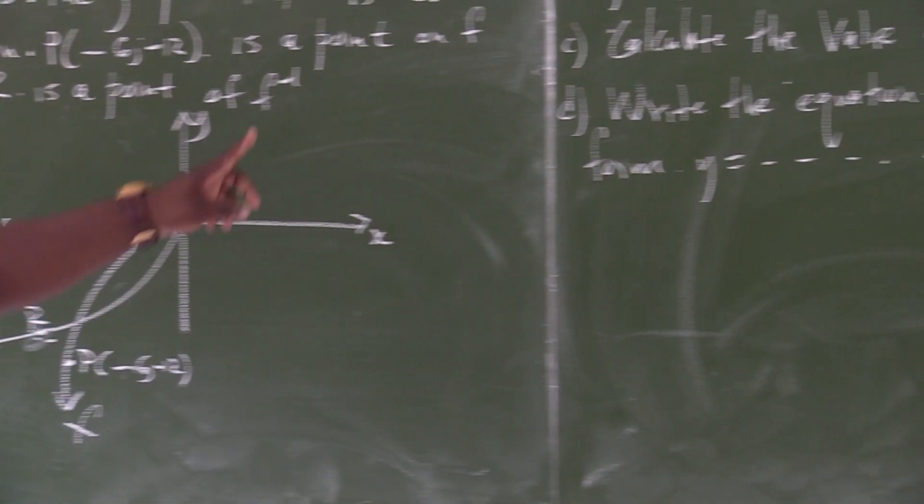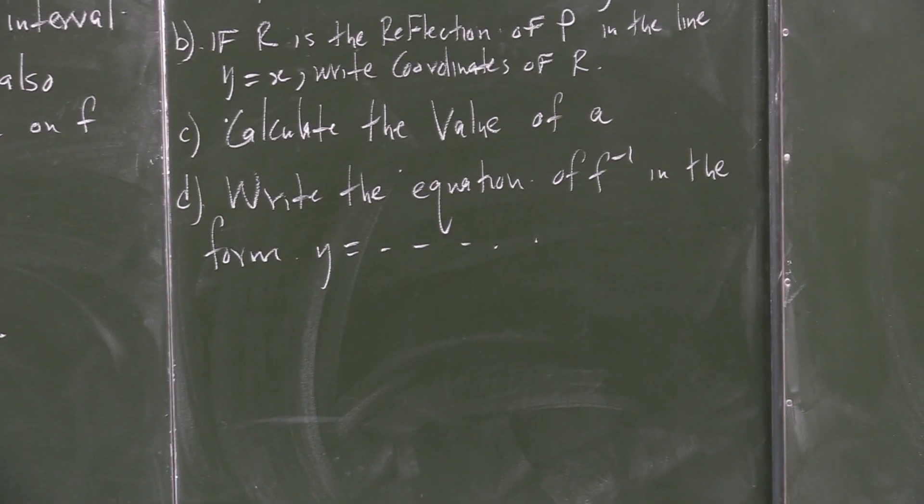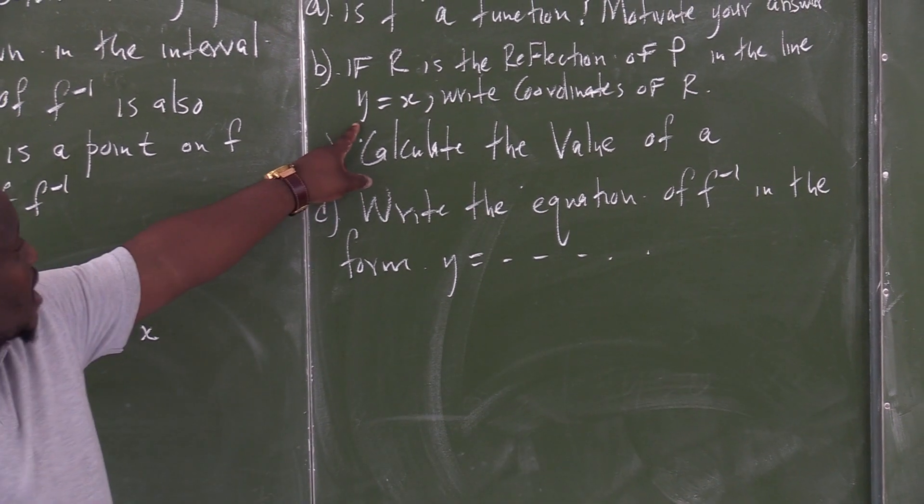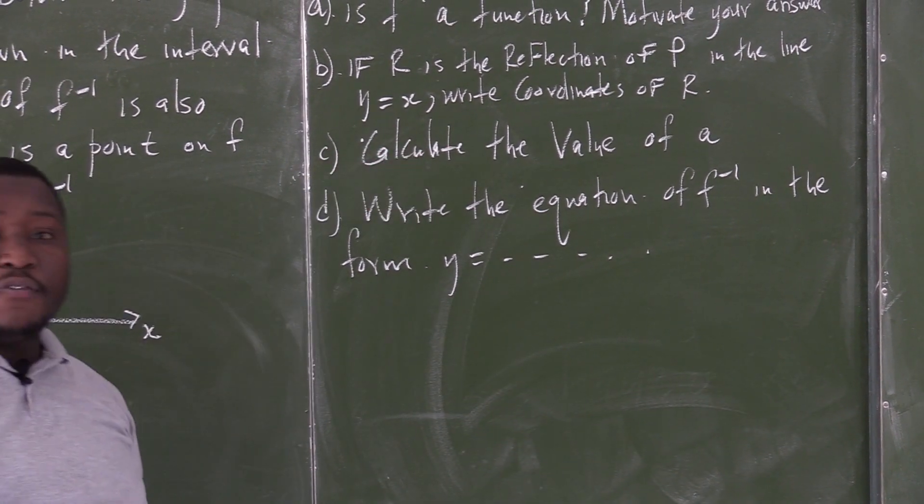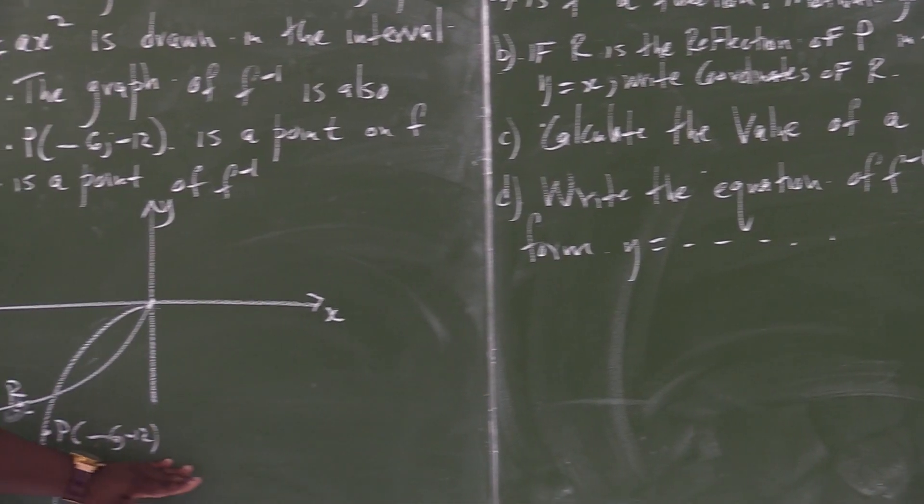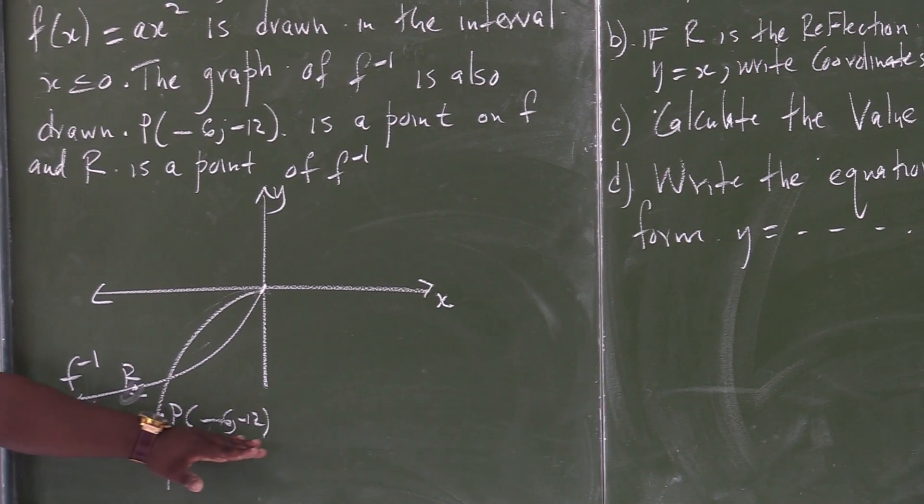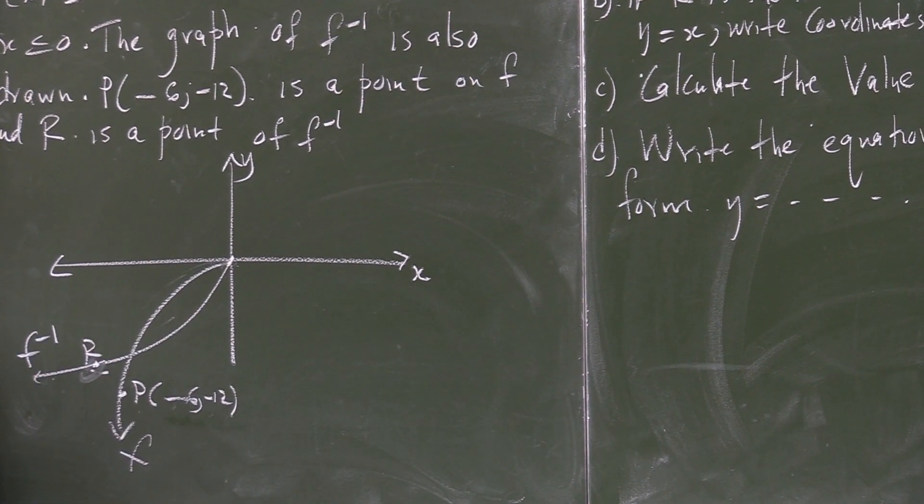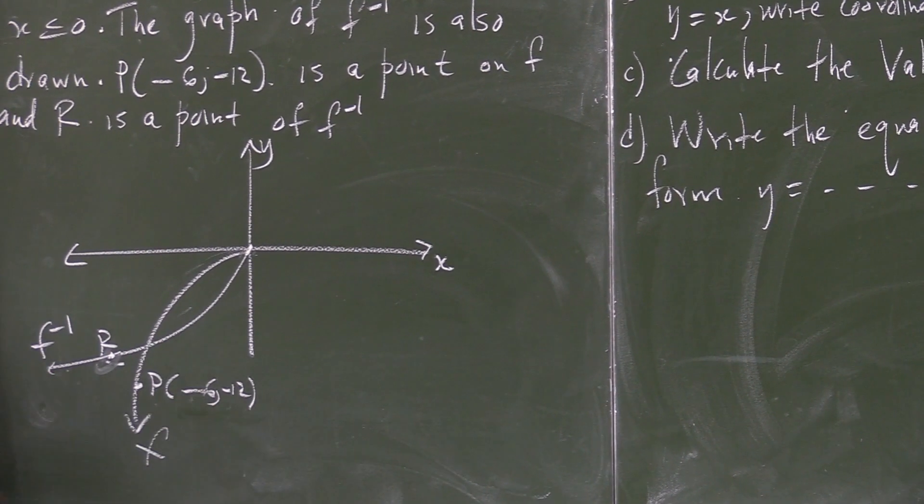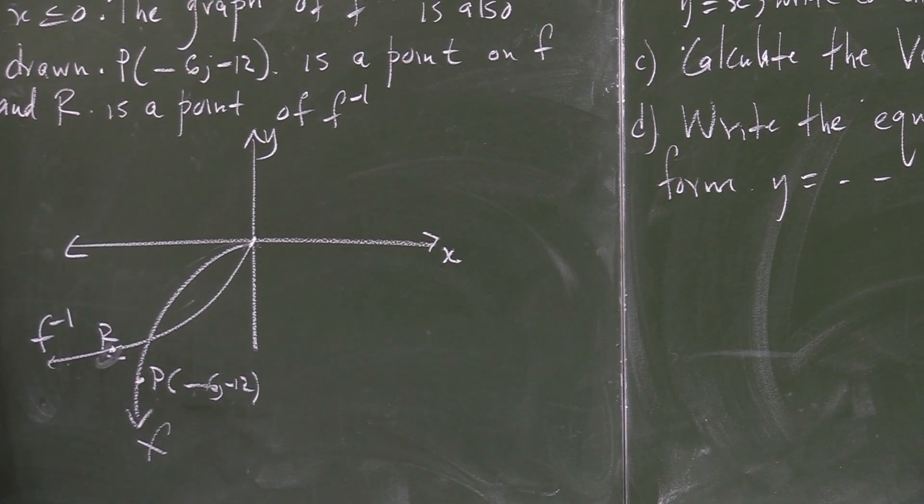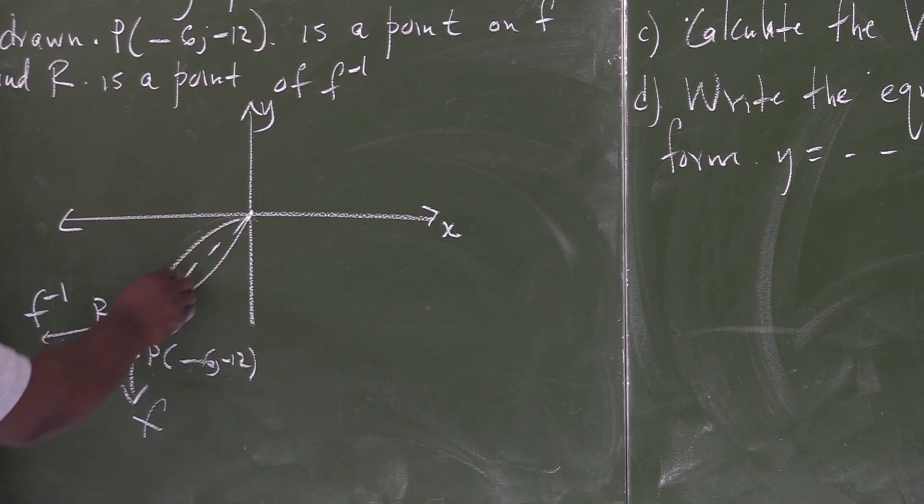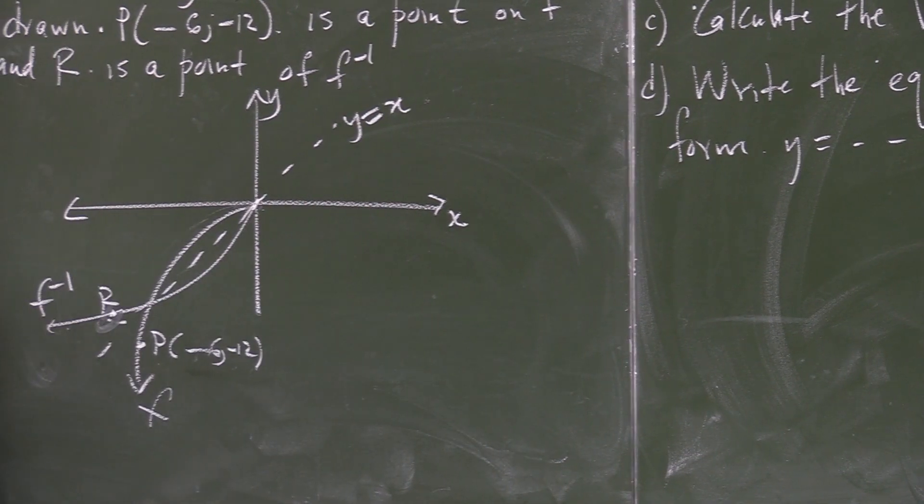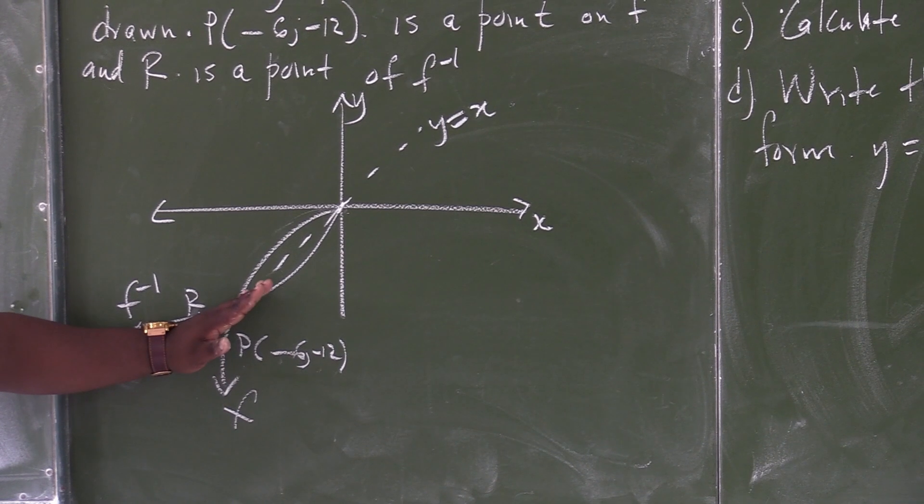Part b: if R is the reflection of point P in the line y is equal to x, right? So, point P is known, okay? Now, I need to reflect point P along the line which says y is equal to x. So, if you reflect this point along the line which says y is equal to x, this is a line that is here. And that is the line that says y is equal to x. So, if you reflect this point P along this line, what is going to happen?